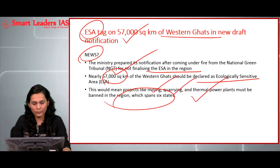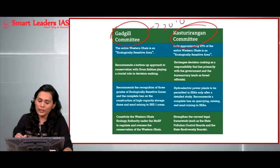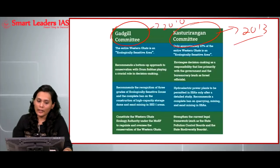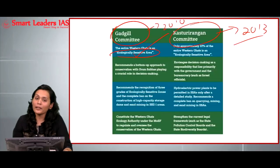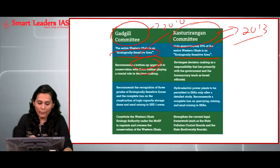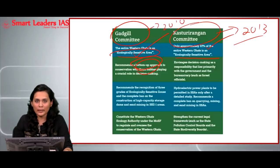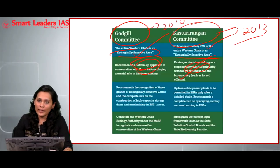Let's see the difference between the Gadgil Committee recommendation of 2010 and the Kasturirangan Committee recommendation of 2013. According to the Gadgil Committee, the entire Western Ghats is to be considered as ecologically sensitive area. However, this was diluted by the Kasturirangan Committee, which proposed only 37 percent of the Western Ghats under the ecologically sensitive area category. The Gadgil Committee followed a bottom-up approach, giving considerable importance to decisions taken by gram panchayats — gram panchayats played a very crucial role in decision-making. However, the Kasturirangan Committee altered this, giving major decision-making responsibility to the government and bureaucracy, including forest officials.